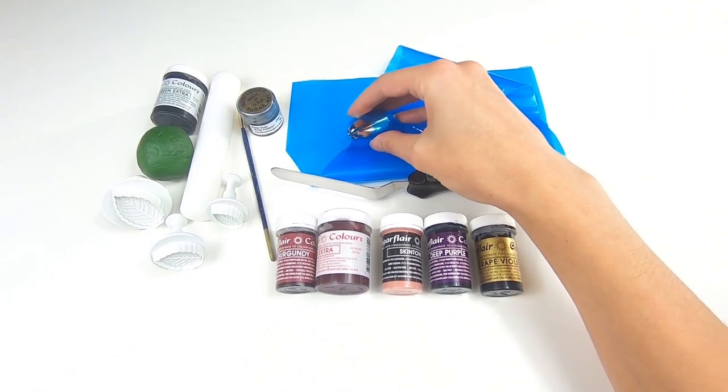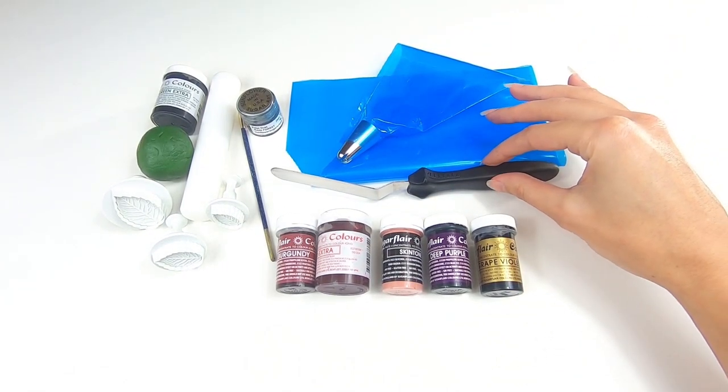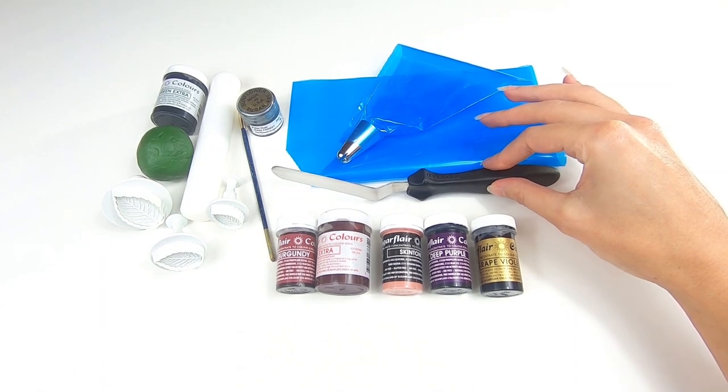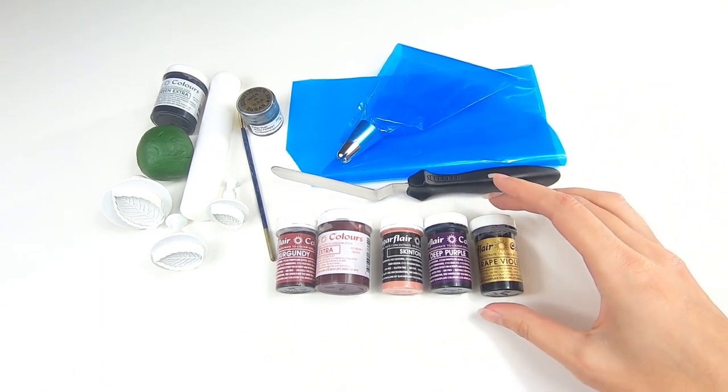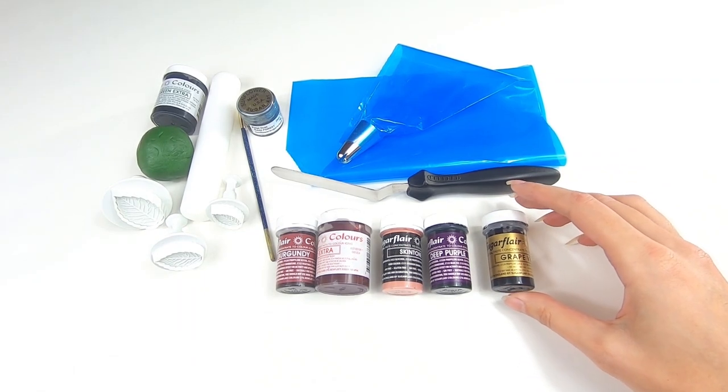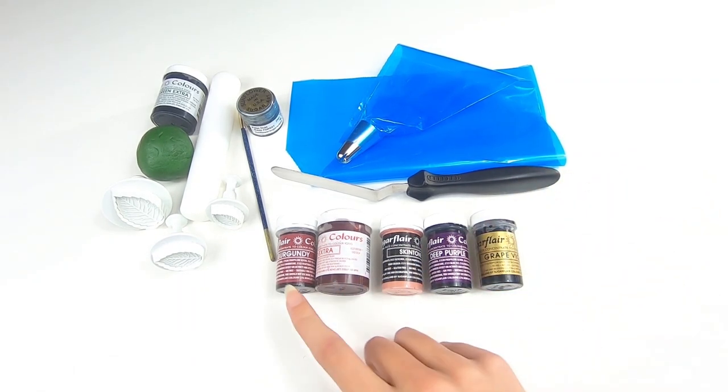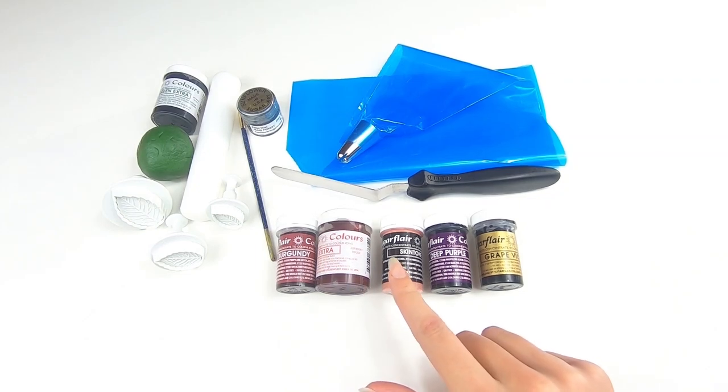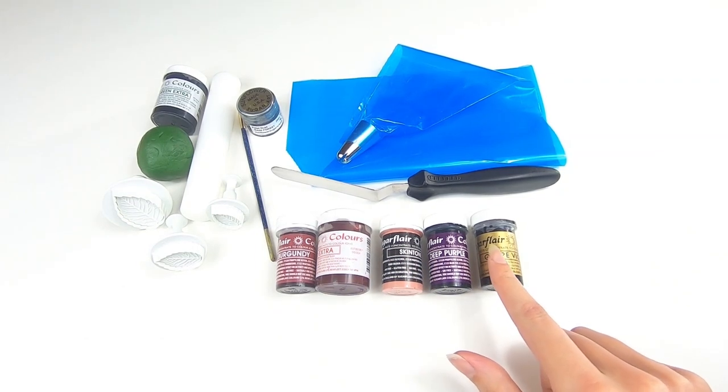You're going to need your piping bag and nozzle. The nozzle is a Wilton 2D. You're also going to need your small angled palette knife and then some edible paste colors to color the buttercream frosting. I'm using Sugar Flair in the colors Burgundy, Red Extra, Skin Tone, Deep Purple and Grape Violet.